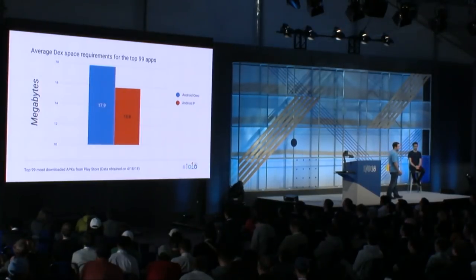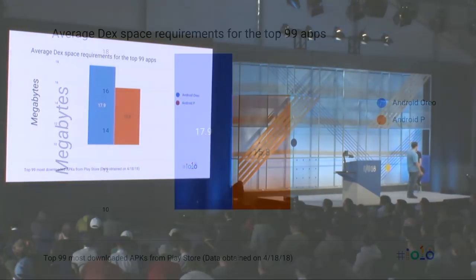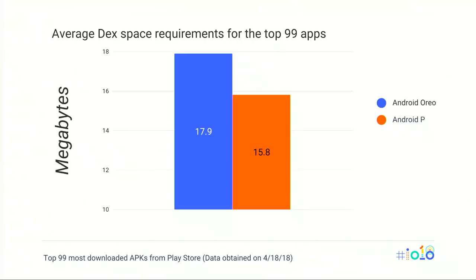Here are the results for the top 99 most downloaded APKs. The average space required by DEX files on a device is around 11.6% smaller. Other than the storage savings, we also get memory savings because DEX files are resident in memory during application usage.